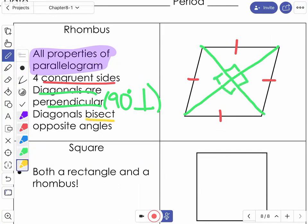So we get four 90s in the middle. And then those diagonals bisect opposite angles. So at each of these corners, we get congruent little pieces. Because remember, this came from parallelogram, which said the opposite angles are congruent. So now they're congruent and now they get cut into equal parts.